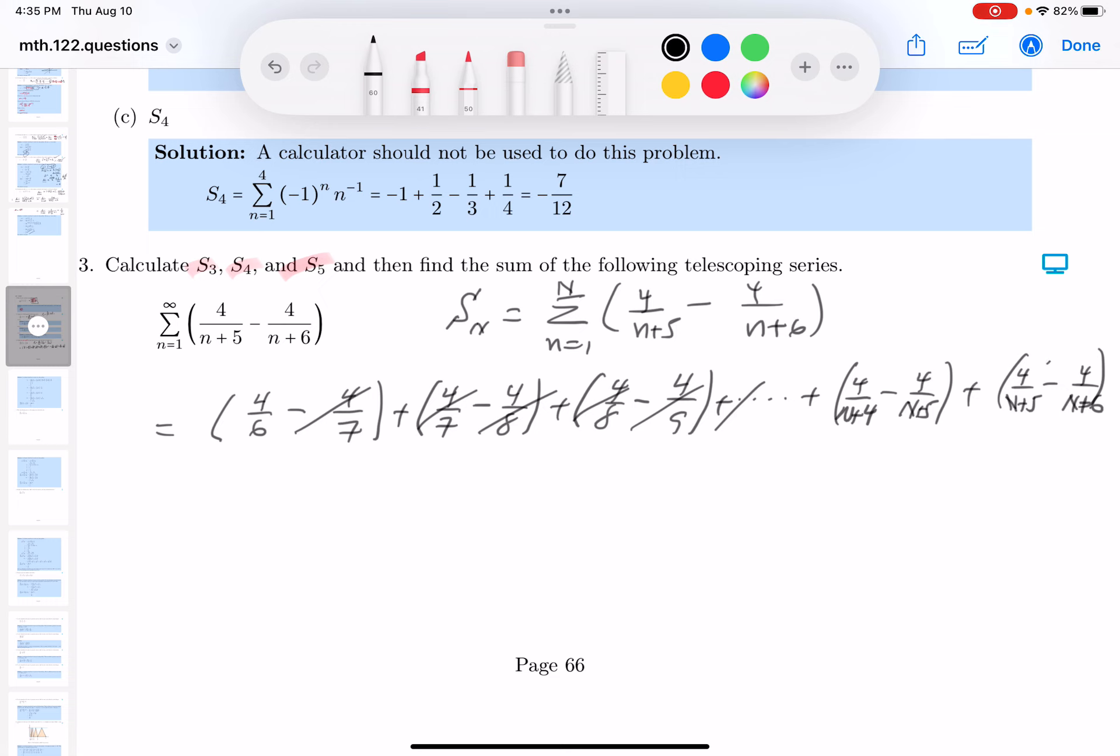All right. I hope you start to realize that there's something over here where this will disappear and everything in the middle is disappearing. So what are you left off with? You're left off with 4 sixths minus 4 over n plus 6. And this is Sn.